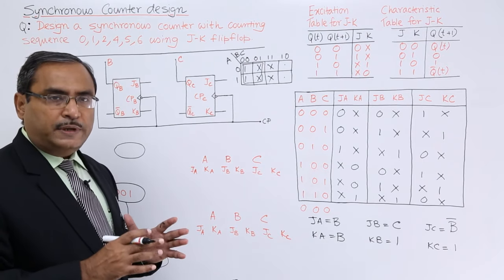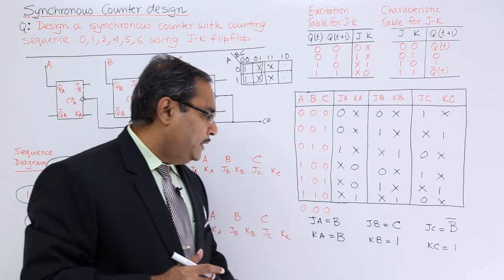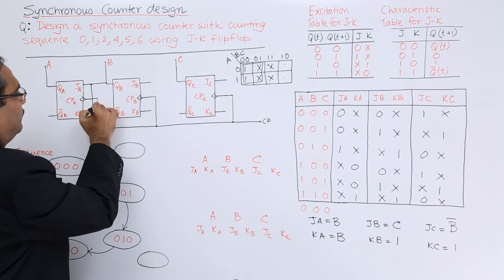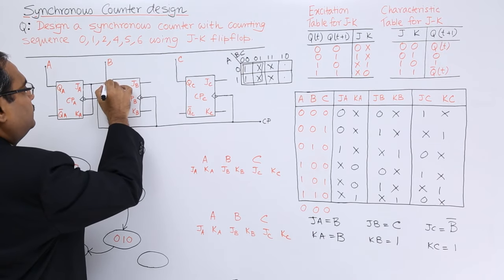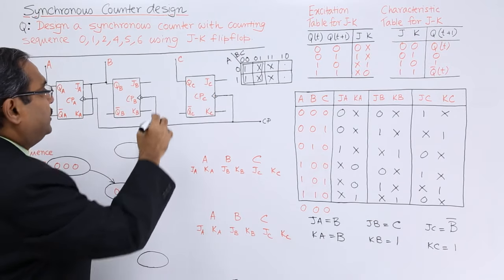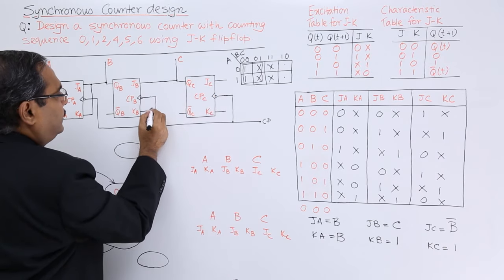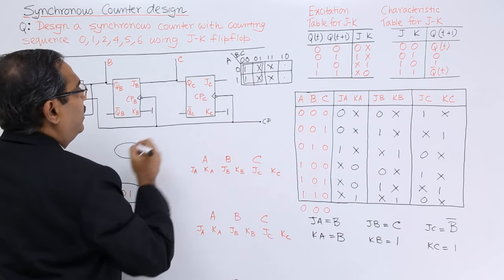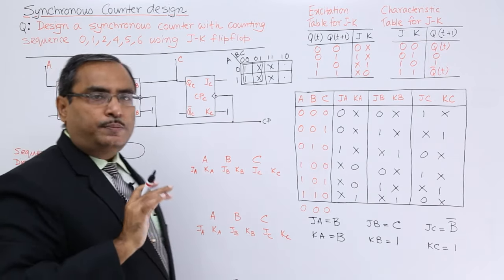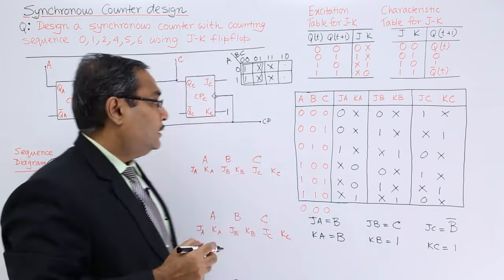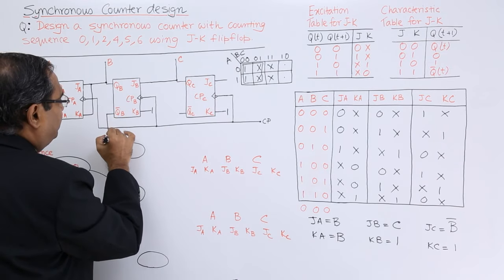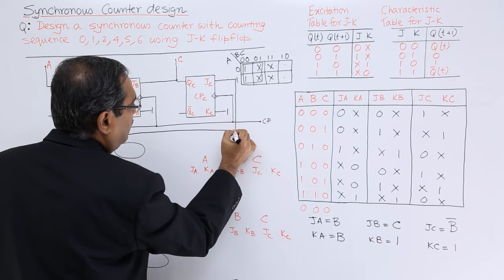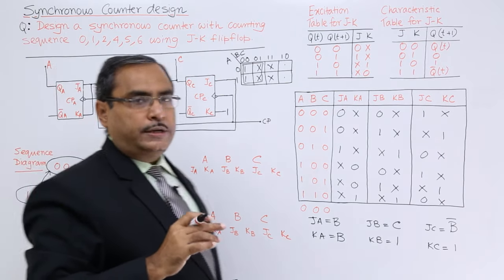Now for the circuit diagram. JA and KA are both connected to B. JB is connected to C, and KB is tied to logic 1. JC is connected to Q̄B (which gives B̄), and KC is tied to logic 1. Wherever connections branch, junction dots are placed. The circuit diagram for the synchronous counter is now complete.